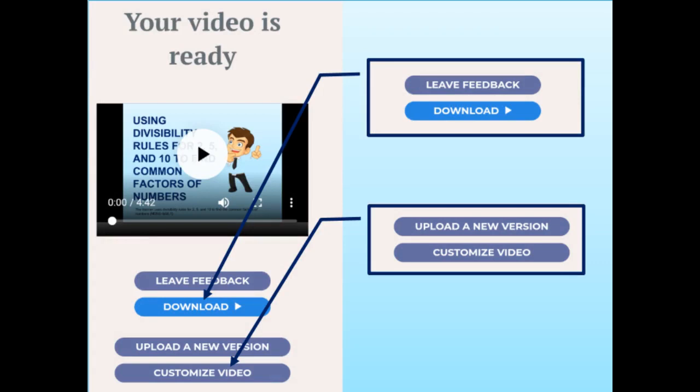Once your video has been completed, this is now your screen. You can play the video immediately, and if you find something to be changed, just click Customize Video. If the video is okay, click Download. The video will be downloaded to your computer if you are using a computer, or to your cell phone if you are using a cell phone. The video is saved in MP4 format — you can now share it.